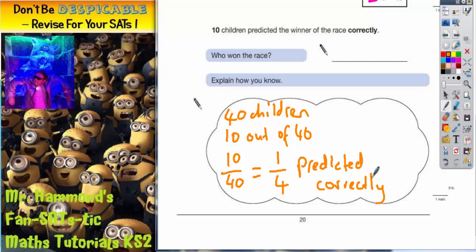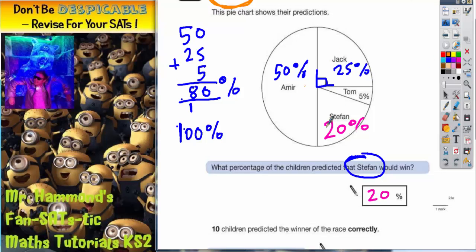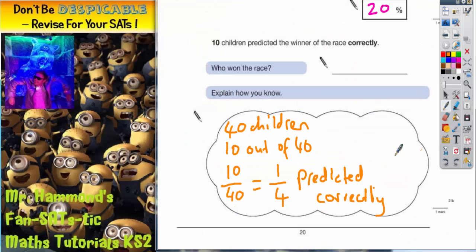So what we need to do is find which one of these four sections matches a quarter. We've already said that Amir is a half and that these two are less than a quarter. The only one that's a quarter is Jack. You can get it either from the right angle or from the 25% which is a quarter. So Jack must have been the winner of the race because his section is the only one that matches a quarter.